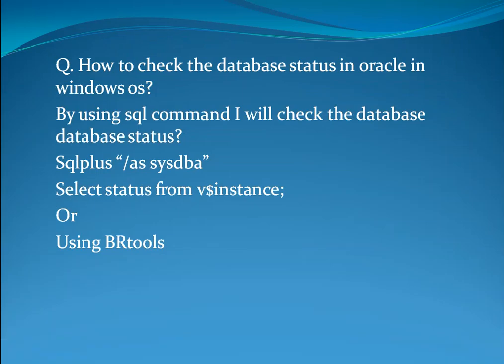How to check the database status in Oracle using Windows? By using the SQL command: sqlplus / as sysdba, then execute: select status from V$instance. By executing that command we check the status of the database — whether it is open or closed. We can also check the database status by using BR tools.